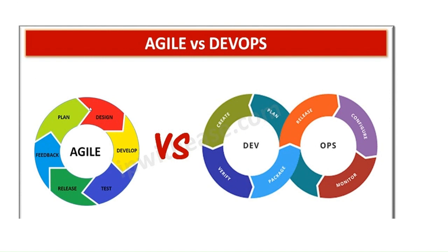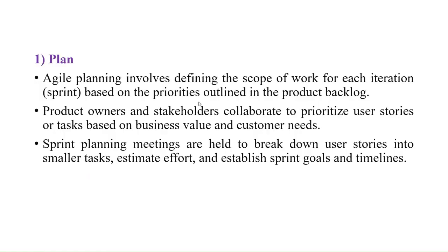In the Agile Model, we have different types of phases: Plan, Design, Develop, Test, Release, and Feedback. Let us see each phase one by one. The first phase in the Agile Development Model is the Plan phase.